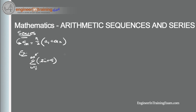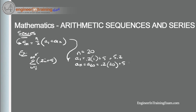Using the general formula we need to define n, a_1, and a_n. n is the number of terms, which is 20. a_1 is the first term, found by plugging in i = 1: 0.2(1) + 5 = 5.2. And a_n is the last term at i = 20: a_20 = 0.2(20) + 5 = 9.